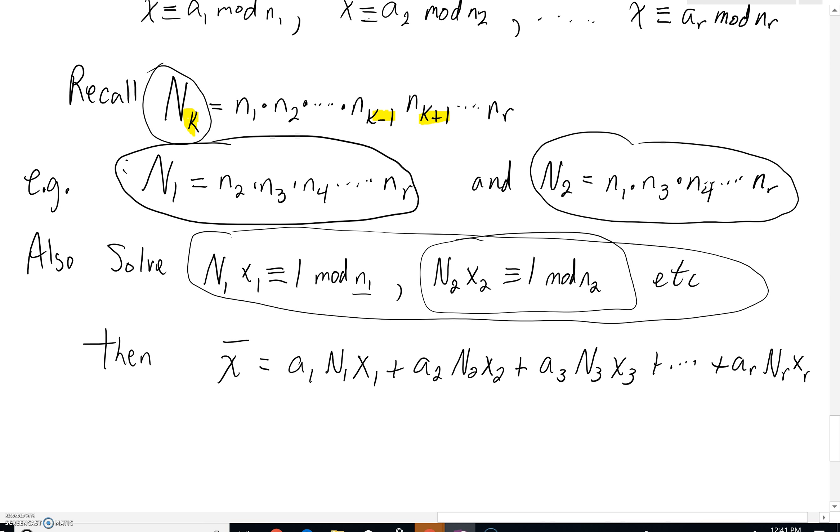The solution to this simultaneous system of equations then would be x̄ equals a sub 1 times capital N sub 1 times x sub 1, plus a sub 2 times N sub 2 times x sub 2, plus a sub 3 times capital N sub 3 times x sub 3, all the way to your r-th term, your final term.